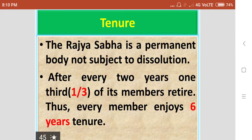The Rajasabha is a permanent body, not subject to dissolution. After every two years, one third of its members retire. Thus, every member enjoys a six-year tenure.